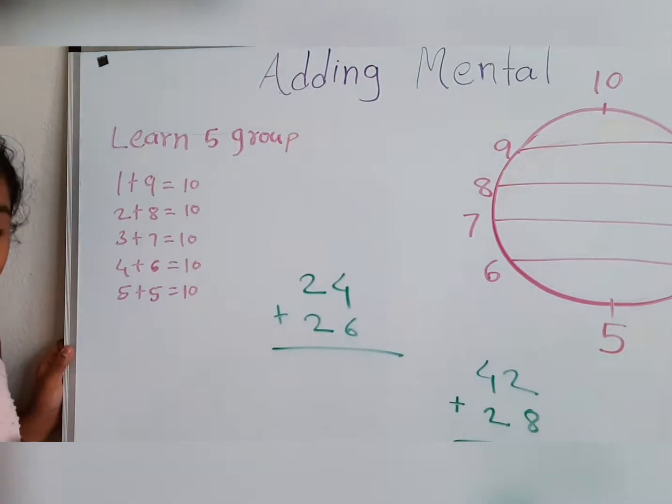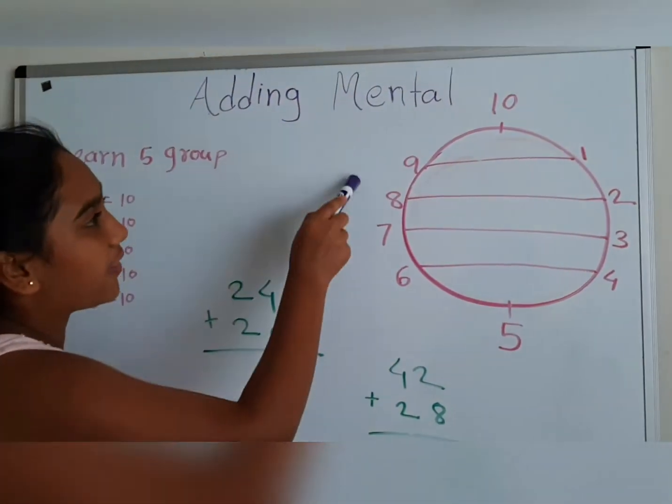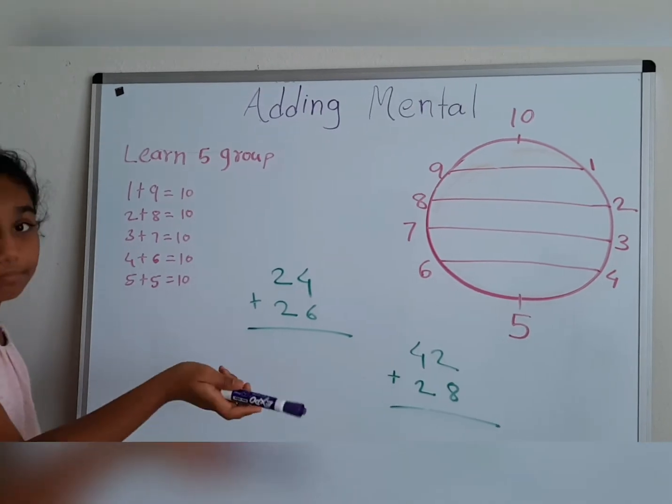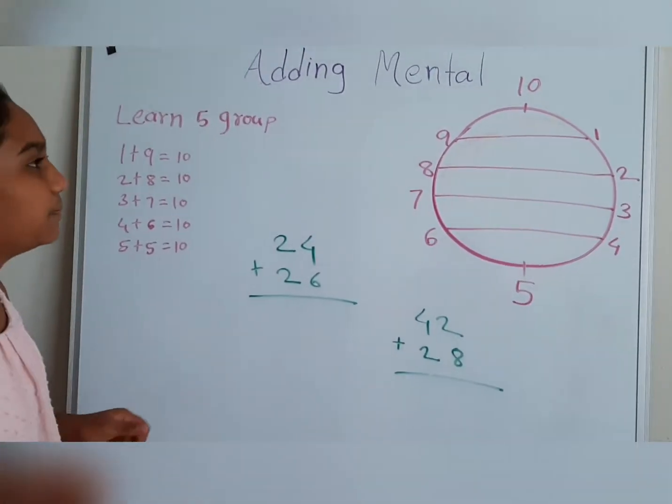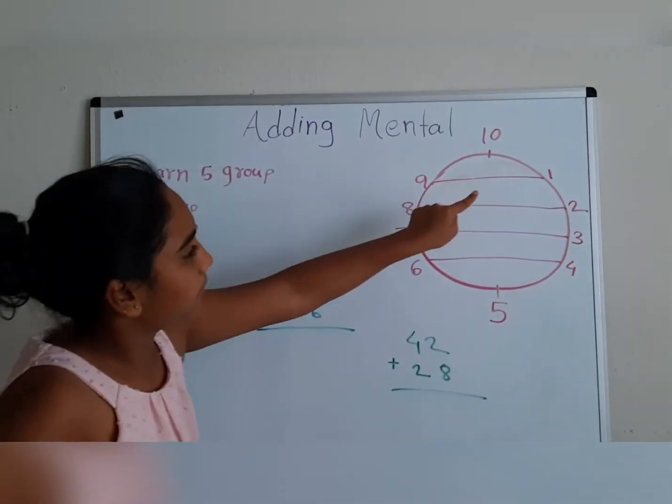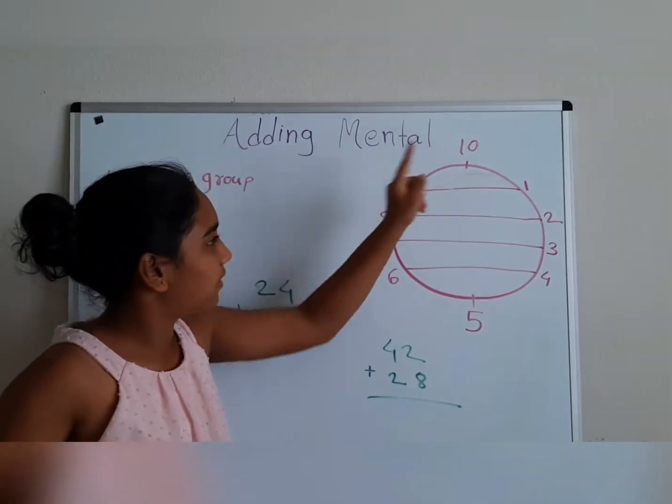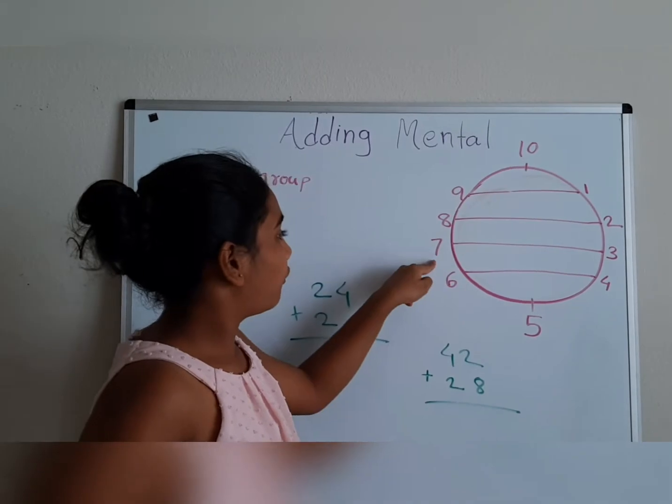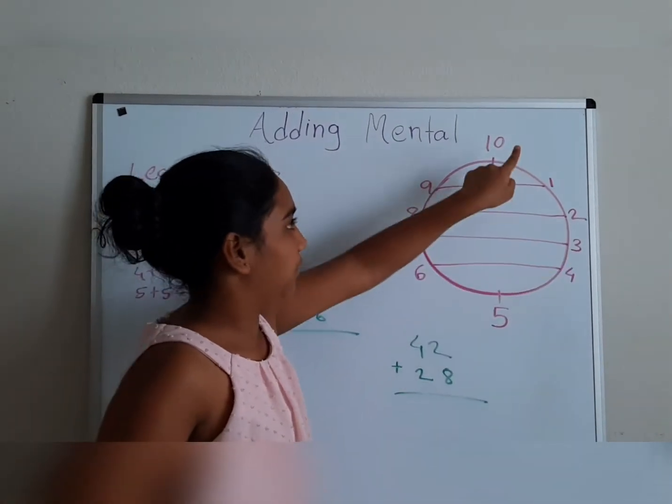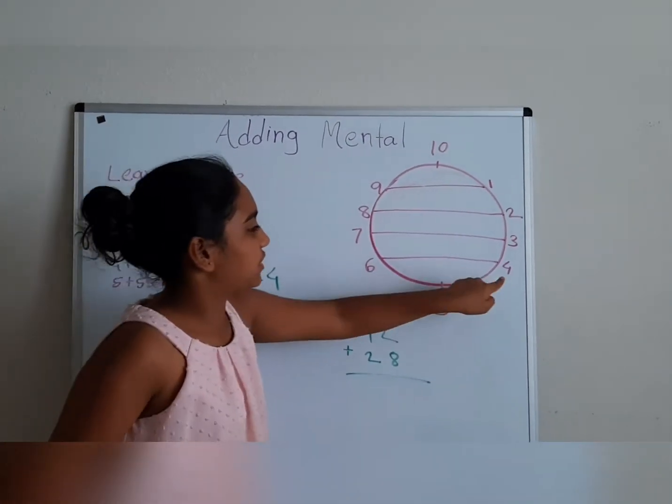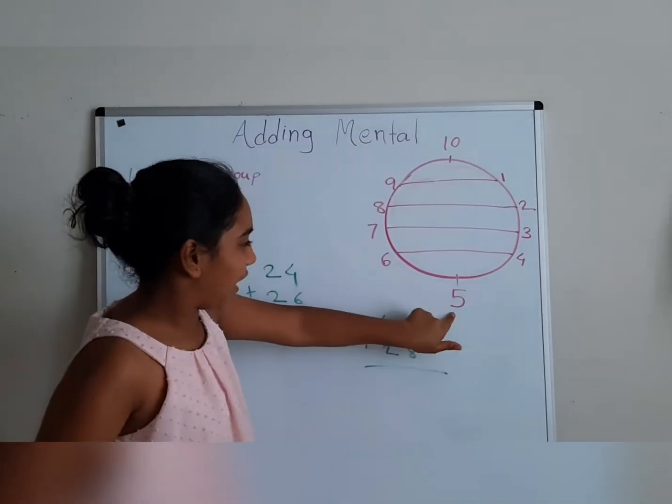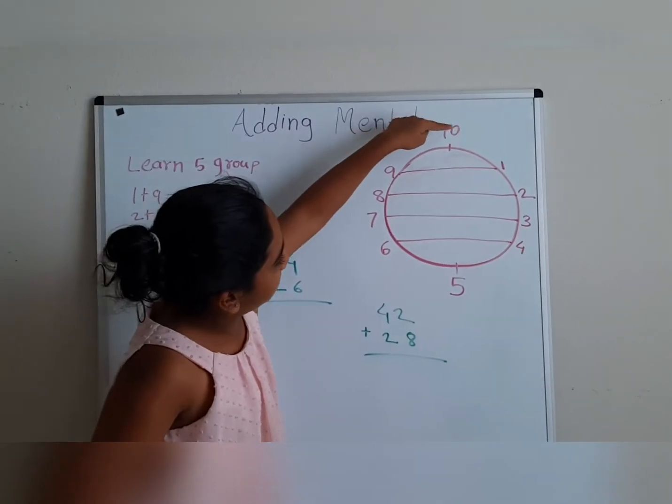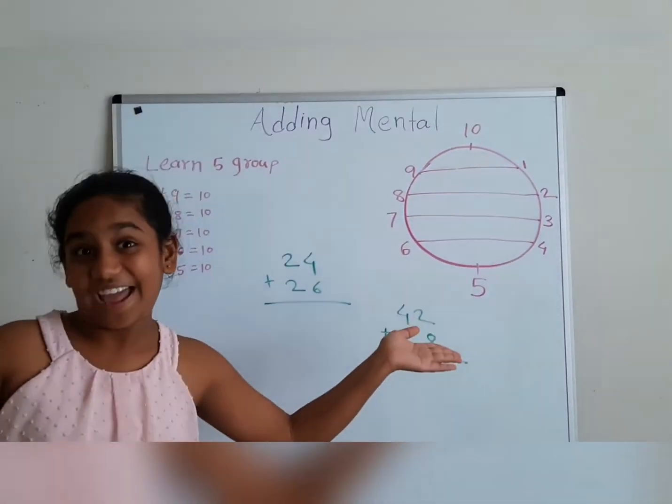Wait! Before getting started, this is another way to learn 5 group. It's a diagram to make you learn easier. Look! 9 plus 1 equals 10. 8 plus 2 equals 10. 7 plus 3 equals 10. 6 plus 4 equals 10. And 5 plus 5 equals 10. And 10 plus 0 equals 10.